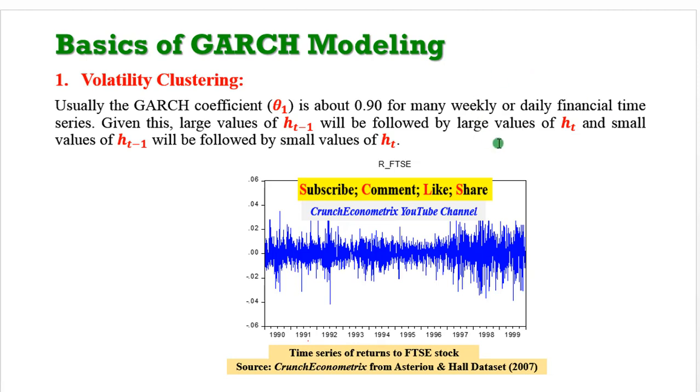For many weekly or daily financial time series, large values of h(t-1) will be followed by large values of h(t), and small values of h(t-1) will be followed by small values of h(t). Looking at this graph of the time series of returns to the FTSE stock, we can observe volatility clustering, where we have large changes followed by large changes and periods of small changes followed by small changes. Volatility clustering is very evident in the pattern of the FTSE stock given the period under survey.